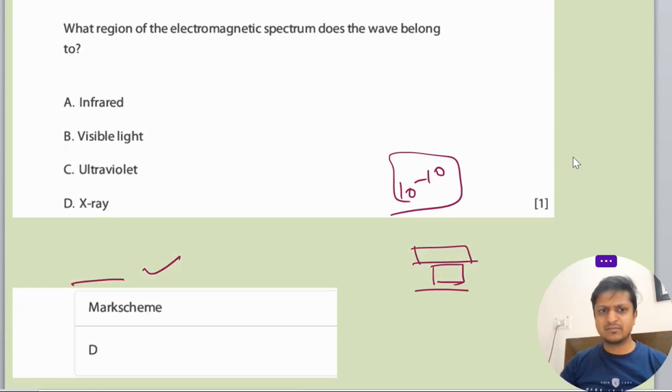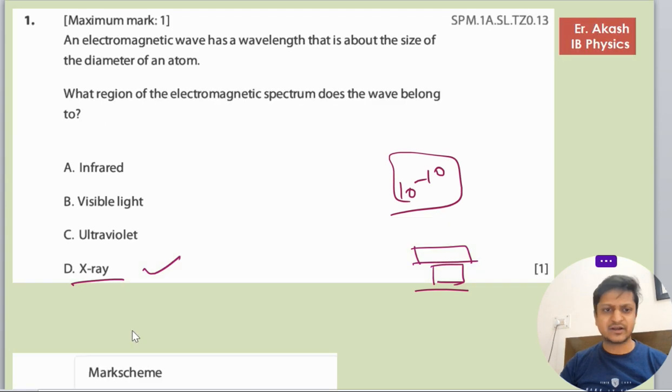Now we will check the mark scheme. Mark scheme says D is the right answer. So in these questions you have to just remember all the parameters of their spectrums, or you can just go through the data booklet also. In the data booklet it is given.